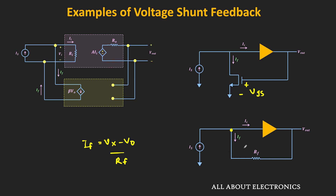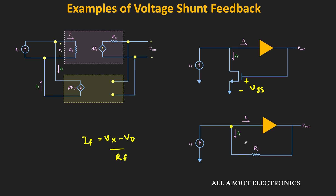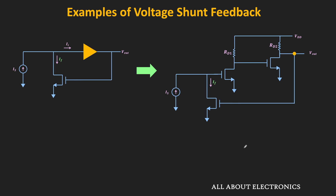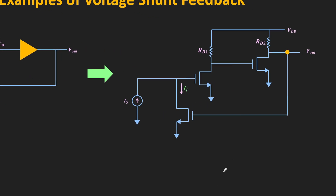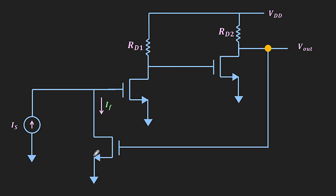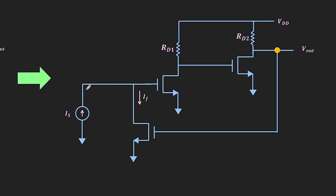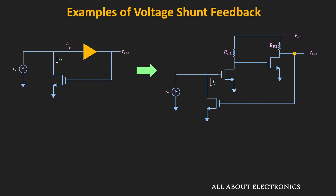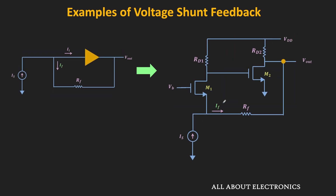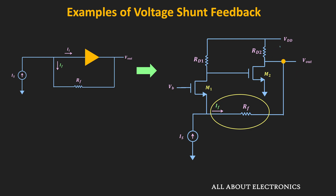Now let us see a few circuits where this voltage-shunt feedback is implemented. In this first circuit, the feedback topology is voltage-shunt feedback, because through the MOSFET, the output voltage is sampled and the drain terminal of this MOSFET is connected to the input current source. The feedback current IF is the current flowing through the MOSFET — so through the MOSFET, we have voltage sampling and current mixing. This is another example of the voltage-shunt feedback where, instead of a transistor, a resistor is used as a passive element to sample the output voltage and send it as a feedback current to the input side. Since the feedback component is directly connected to the output node, it samples the voltage, and on the input side we have current mixing.